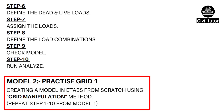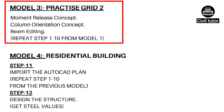The second model, named practiceGrid1, involves creating a model in ETABS from scratch using the grid manipulation method. The necessary steps for this model will be the same as mentioned in Model 1. The third model, named practiceGrid2, covers the moment release concept, the column orientation concept, and beam editing. Again, the steps will be the same as Model 1.